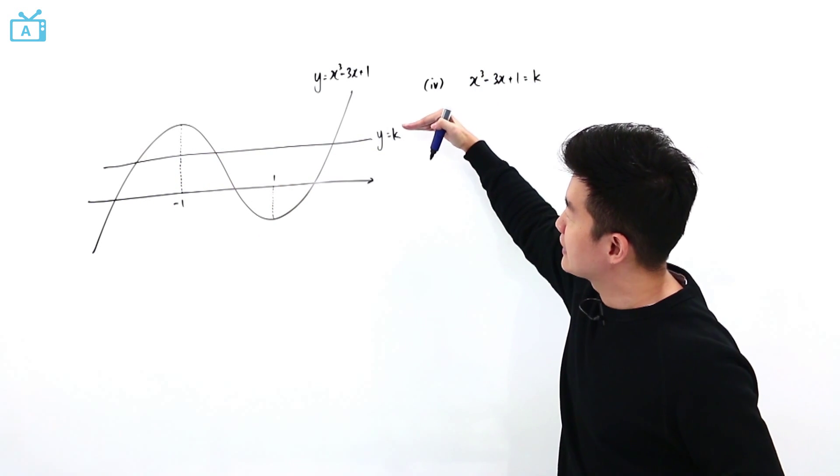And this line will be cutting the curve at three points, giving this equation here three distinct roots as long as this line is in between the maximum and the minimum point of the curve. That is why the only thing that we need to do now is to find the y coordinate of this point and this point.